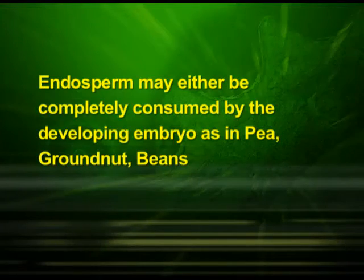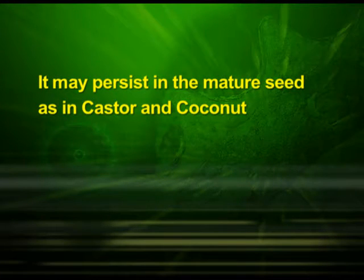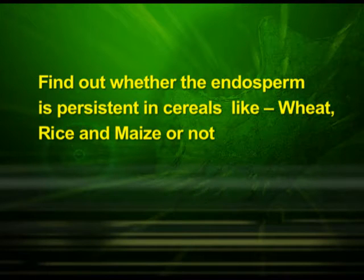The coconut water from tender coconut is an example of free nuclear endosperm, made up of thousands of nuclei, while the surrounding white kernel is the cellular endosperm. Endosperm may be completely consumed by the developing embryo before seed maturation, as in pea, groundnut and beans, or it may persist in the mature seeds, as in castor and coconut, and be used up during seed germination. You can split open seeds of castor, peas, beans, groundnut and coconut to look for endosperm in each case, and find out whether endosperm is persistent in cereals like wheat, rice and maize.